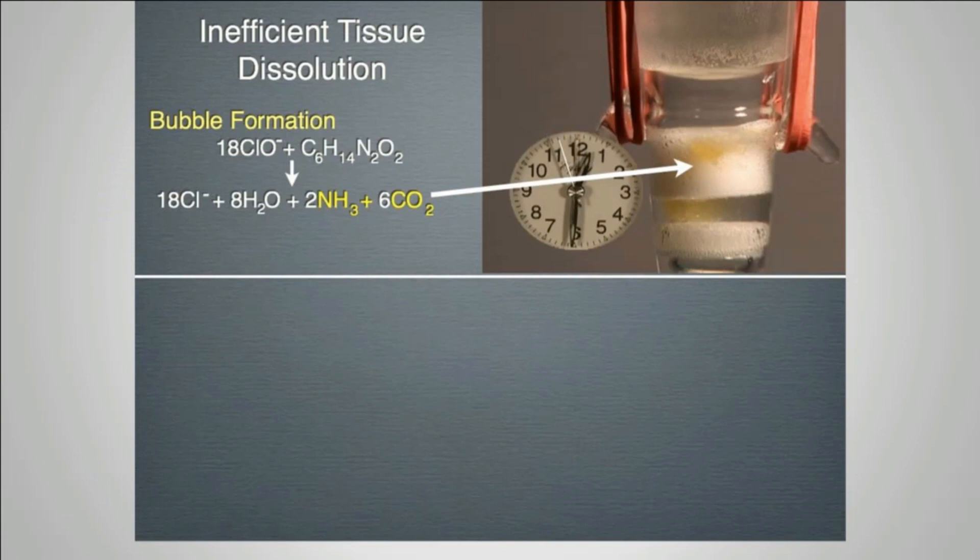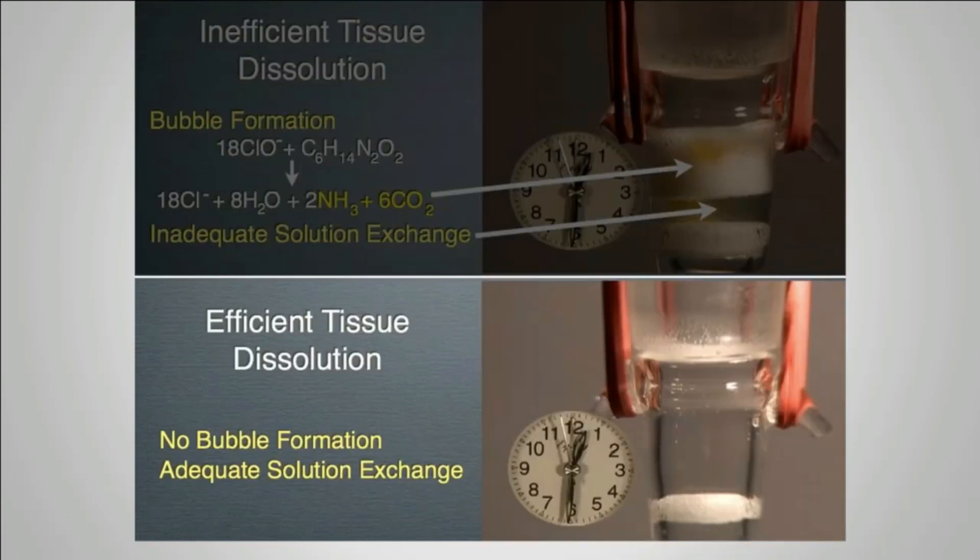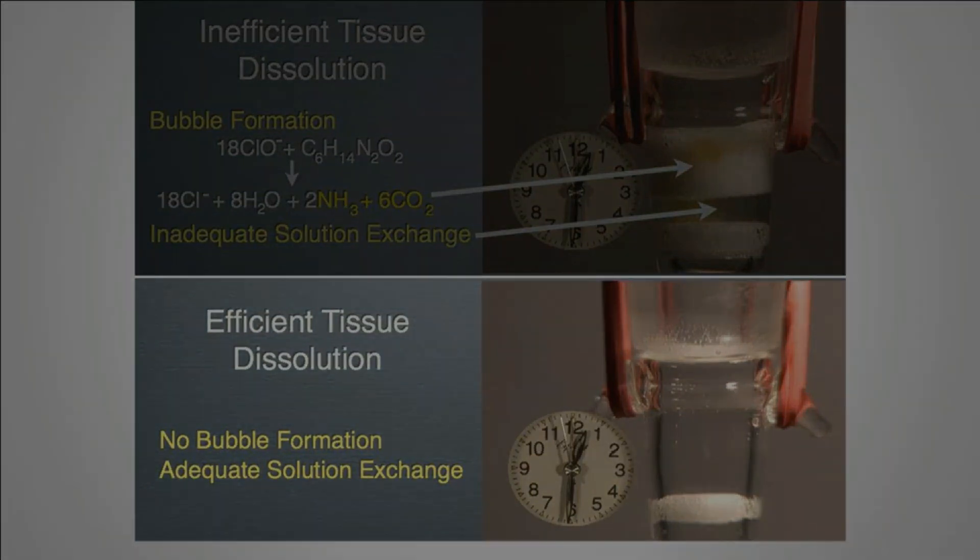If we look at inefficient tissue dissolution: ammonia, carbon dioxide, bubble formation, and inadequate solution exchange—that's the key. If we look at efficient tissue dissolution: no bubble formation, adequate solution exchange.